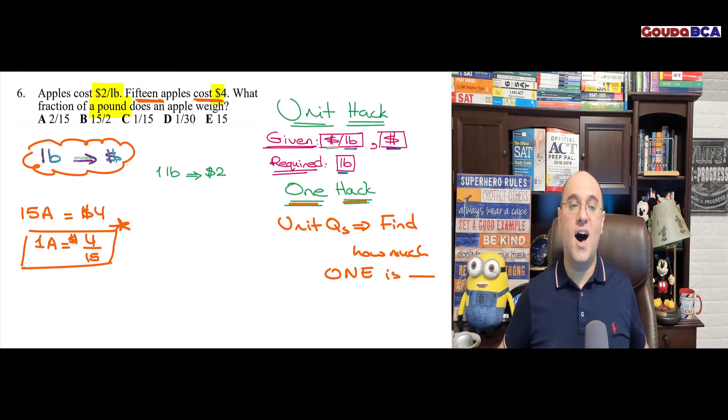This is already given. Now, I need a new relationship. I know that one apple costs $4 over 15. So here I have $4 over 15. What's $4 over 15? That is the cost of one apple. Correct? Correct.